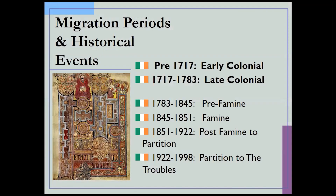The bottom line for all of those divisions is: if you can make sense of those divisions, the rest of this is smooth sailing. So what we're going to talk about today is the early and late colonial periods — pre-1717 and then 1717 to 1783. Next Wednesday, same time, we're going to talk about from 1783 down to the end of the 20th century.